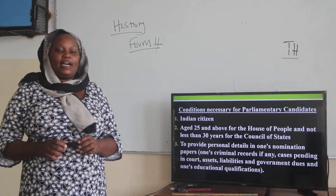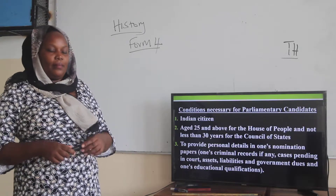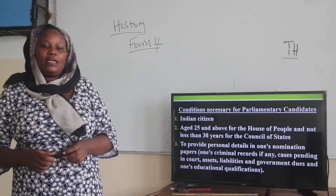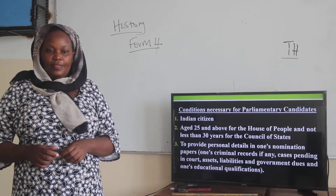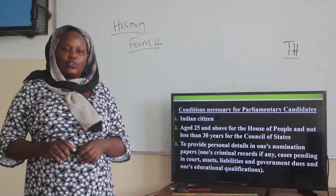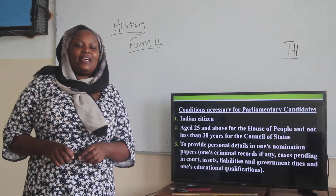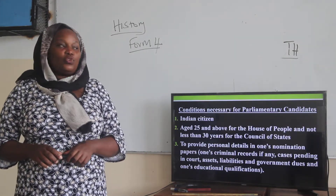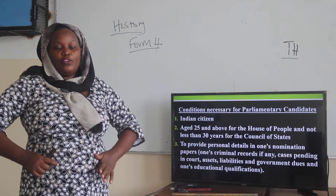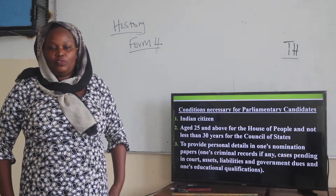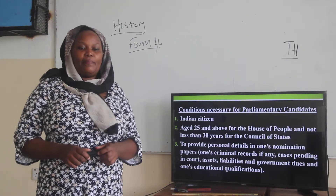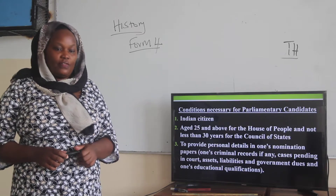What are the conditions necessary for a parliamentary candidate? If you want to become a member of parliament, first you must be a citizen of India. You must be 25 years and above for the House of the People, and not less than 30 years for the Council of States. So you must be either 25 to become a member of parliament, or 30 years and above to become a member of the Council of States.